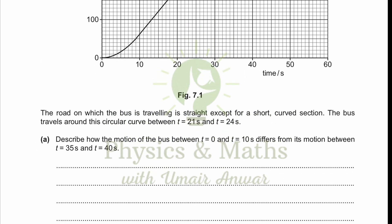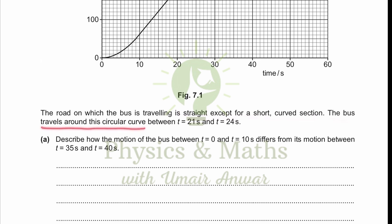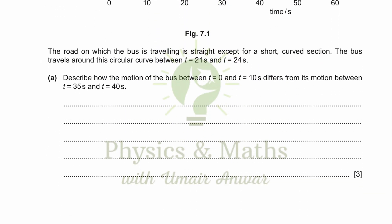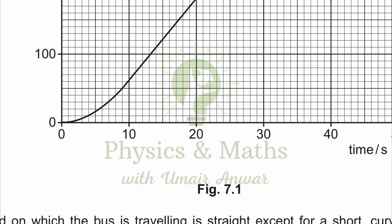The road on which the bus is traveling is straight except for a short curved section, so the direction of the bus would not be changing except for that short curve. The bus travels around this circular curve between t equals 21 and t equals 24 seconds — this is where the direction of the bus would have been changing. The question asks us to describe how the motion of the bus between t equals 0 and t equals 10 seconds differs from its motion between t equals 35 and t equals 40 seconds. Looking at the first portion, we can see a curve.